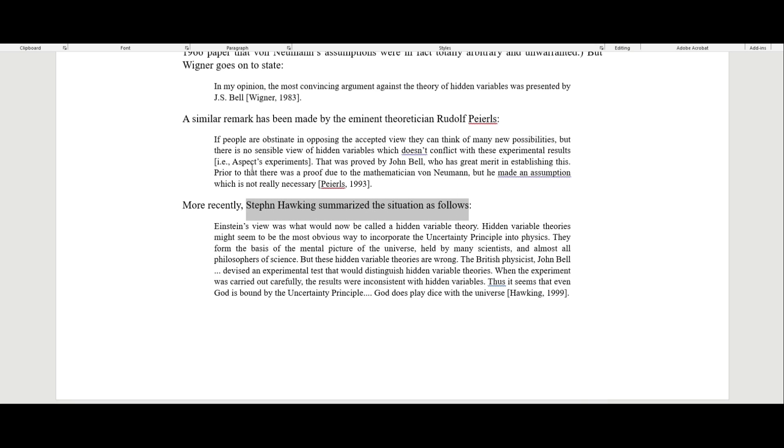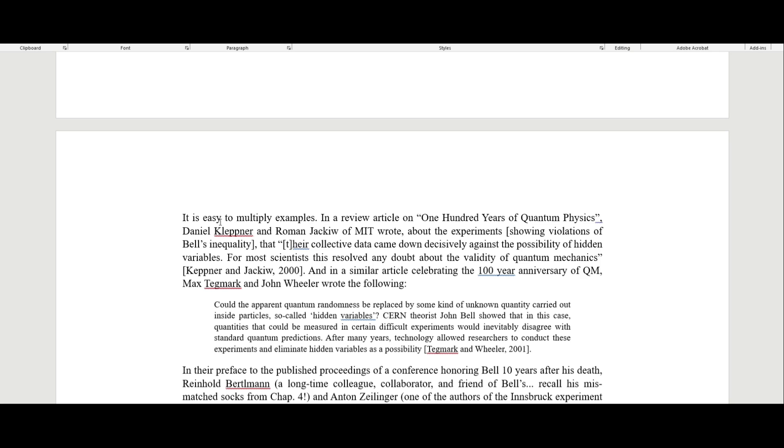More recently, Stephen Hawking summarized the situation as follows: Einstein's view was what would now be called a hidden variable theory. Hidden variable theories might seem to be the most obvious way to incorporate the uncertainty principle into physics. They form the basis of the mental picture of the universe held by many scientists and almost all philosophers of science. But these hidden variable theories are wrong. The British physicist John Bell devised an experimental test that would distinguish hidden variable theories. When the experiment was carried out carefully, the results were inconsistent with hidden variables. Thus, it seems that even God is bound by the uncertainty principle. God does play dice with the universe.